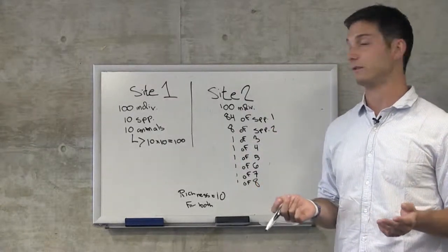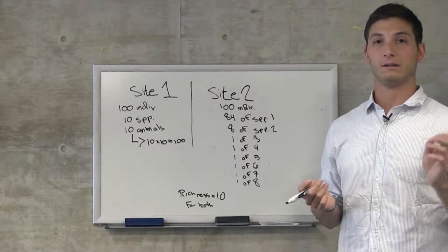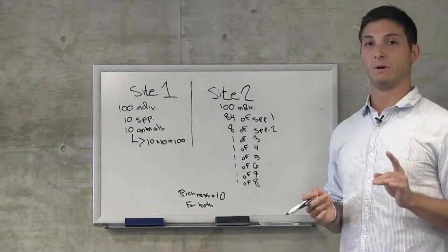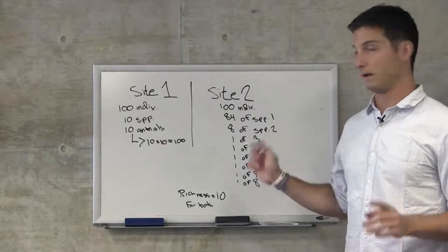We're going to get another 100 overall individuals. But clearly the community is then dominated by species 1, and the overall evenness of site 2 is low.